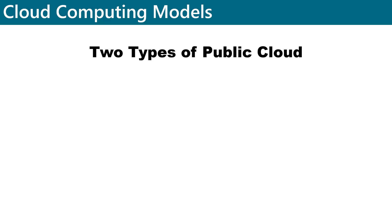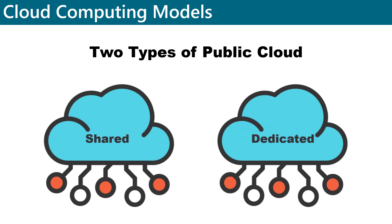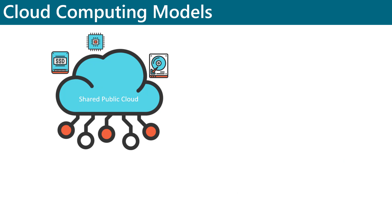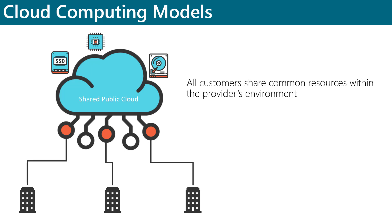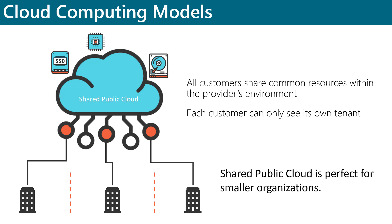There are two different types of public cloud: the shared public cloud and the dedicated public cloud. A shared public cloud allows customers of a cloud service provider to share common resources within that provider's environment. Each customer can only see its own tenant, and the cloud provider is the only one that can see all of the different tenants. It's this cloud provider that manages the multi-tenant environment. The shared public cloud model is often a good choice for smaller businesses because by sharing resources with other customers, it helps them save on costs.